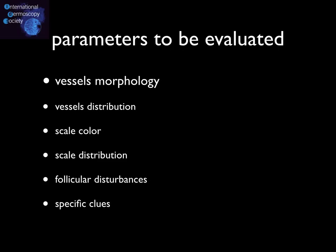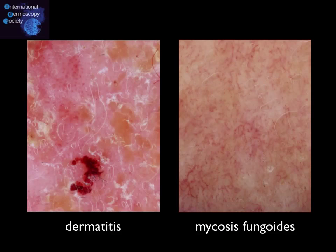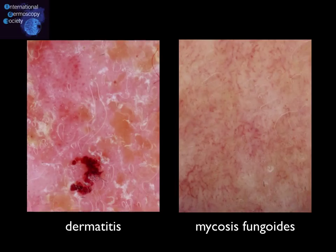The morphology of the vessels is maybe the most important and common criterion to be evaluated when applying dermoscopy in inflammatory lesions. Two are the basic morphologies that can be seen: dotted vessels and linear ones. A characteristic example where vessel morphology is the most crucial criterion is the differentiation between dermatitis, typified by dotted vessels in both acute and chronic forms, versus mycosis fungoides, which displays at its early stages short and thin linear vessels.